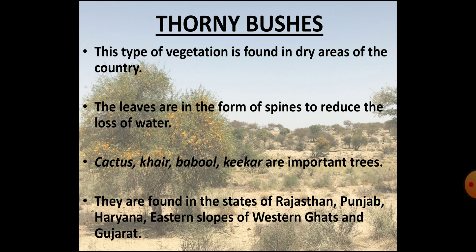The third type of vegetation found in India is thorny bushes, occurring in dry regions and also referred to as desert vegetation. They have needle-like leaves and some plants have leaves in the form of spines to prevent loss of water. Major species found in these areas include Cactus, Khair, Kikar, Babool, Ber, Date Palm and Dhak. They are found in the states of Rajasthan, Gujarat, Punjab, Haryana, parts of Madhya Pradesh, eastern slopes of the Western Ghats and central rocky regions of the Deccan Plateau.